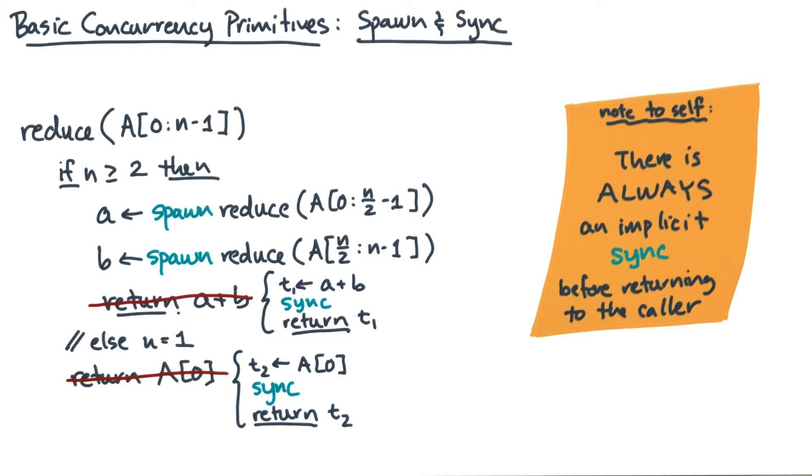Now, an important point. Even with this transformation, the program is still wrong. Can you see why? Notice that the sync appears after the sum. The two spawned calls are only guaranteed to be complete at the sync. Therefore, the values of A and B might not yet be valid at that point.